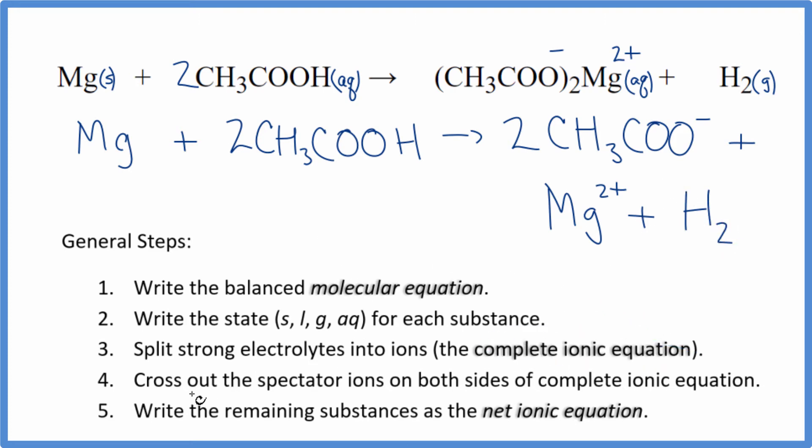Now we can cross out spectator ions. They're on both sides. The thing is, everything here is unique. We have magnesium here, metal, but this is magnesium ion. It's going to be dissolved, aqueous, very different. The acetic acid, these two molecules, are very different than these two ions. So since everything is different,